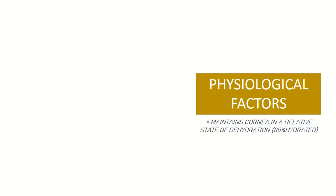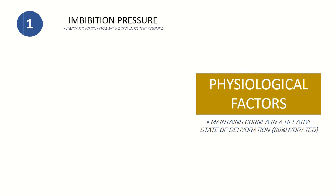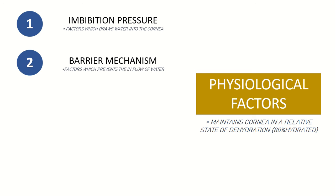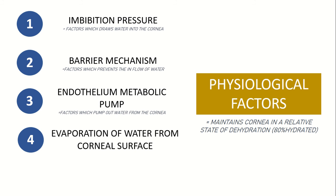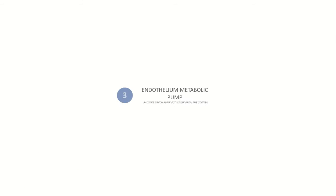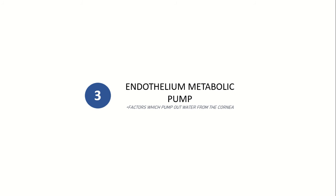Physiological factors help maintain the cornea in a relative state of dehydration, which is at around 78% to 80% hydrated. These factors are inhibition pressure, barrier mechanism, endothelium metabolic pump, evaporation of water from corneal surface, and intraocular pressure. Our focus for today is the third physiological factor: the endothelium metabolic pump.